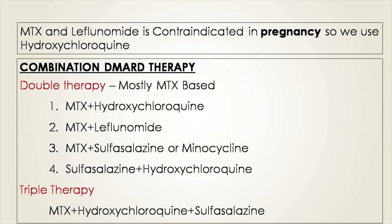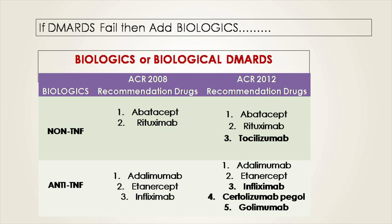Even after giving these three drugs, if the patient is still not responding or shows no change in pathology, you should move to biological agents. Biological agents include two classes: the first class is non-TNF drugs, and the second class is anti-TNF drugs. Non-TNF drugs are not targeted to tumor necrosis factor alpha, whereas anti-TNF drugs are specifically designed to target TNF-alpha.